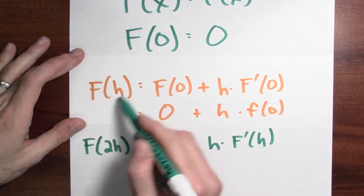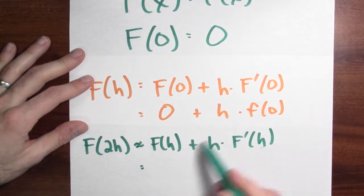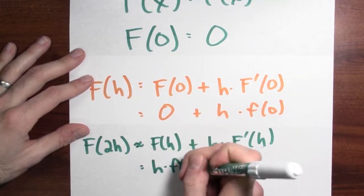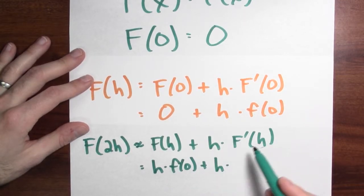But now I've already got an approximation for big F at h. It's h times f of 0. So I'll use that for my value of big F at h: h times f of 0 plus h times, and I know f prime of h.